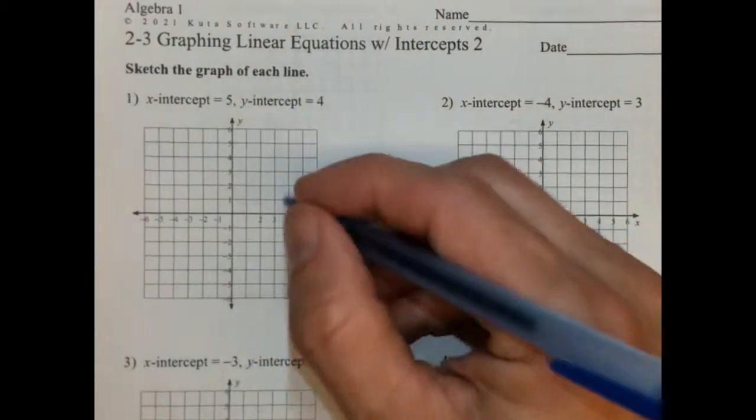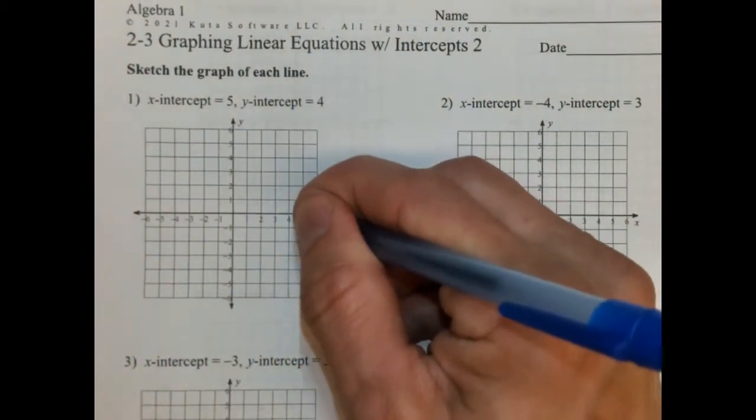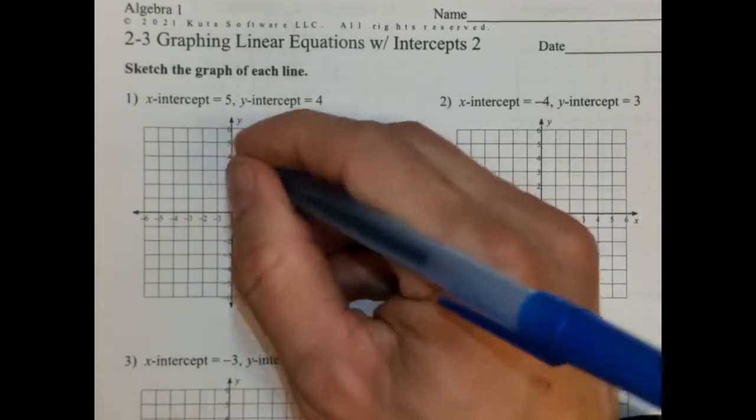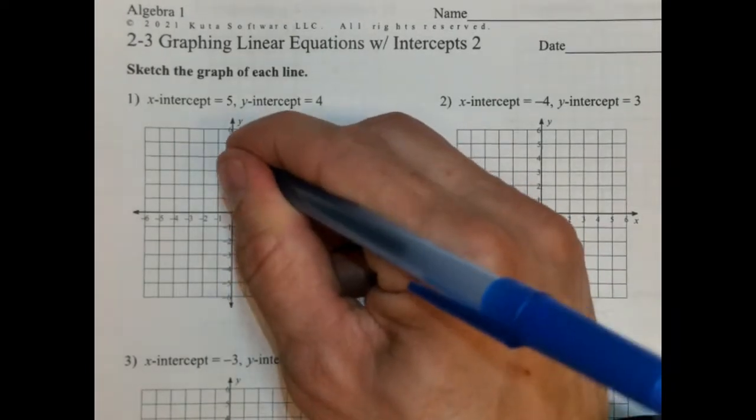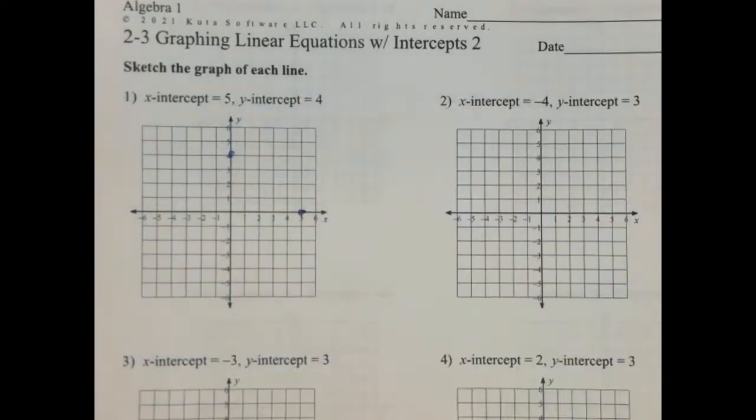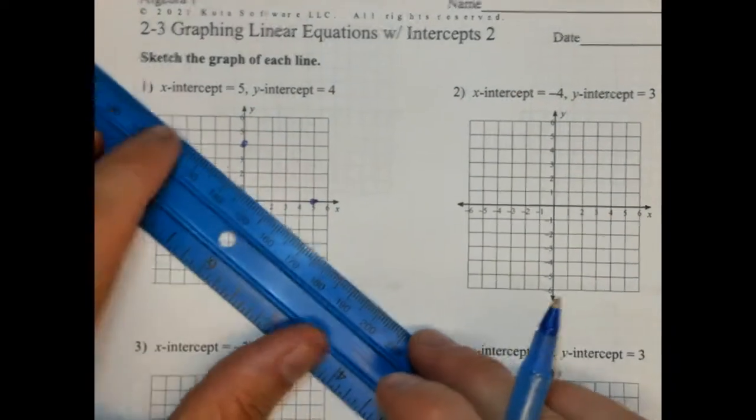The x-intercept is 5. The y-intercept is 4. This forms a line with a negative rate of change.